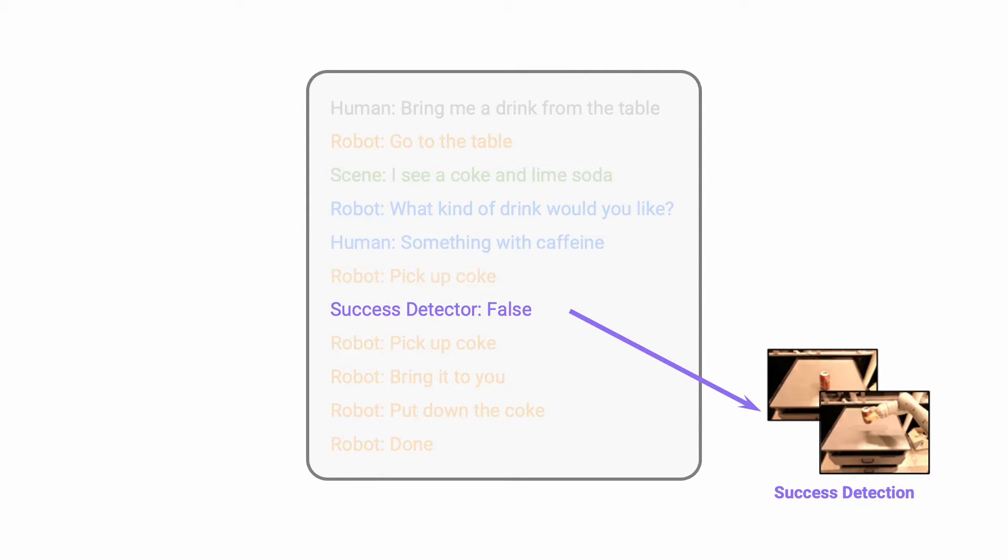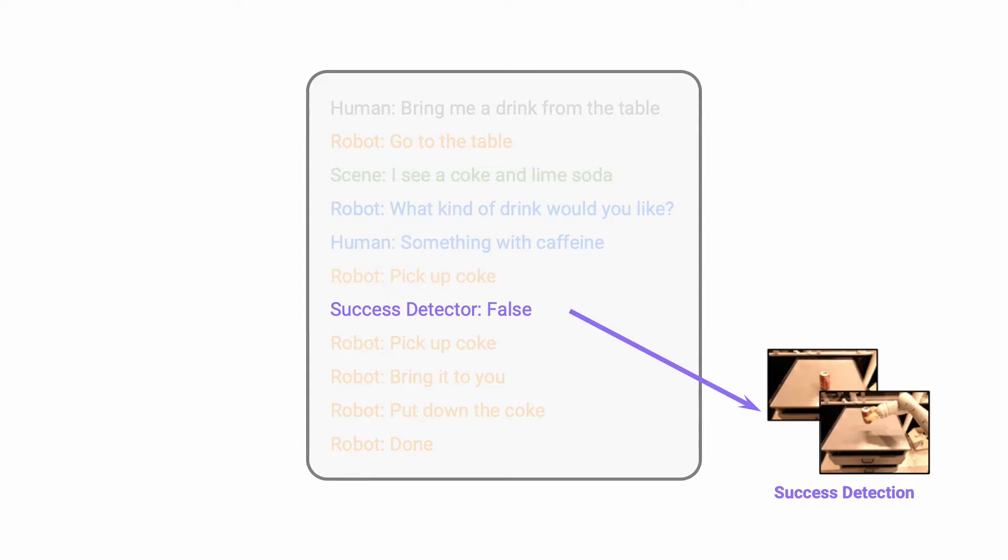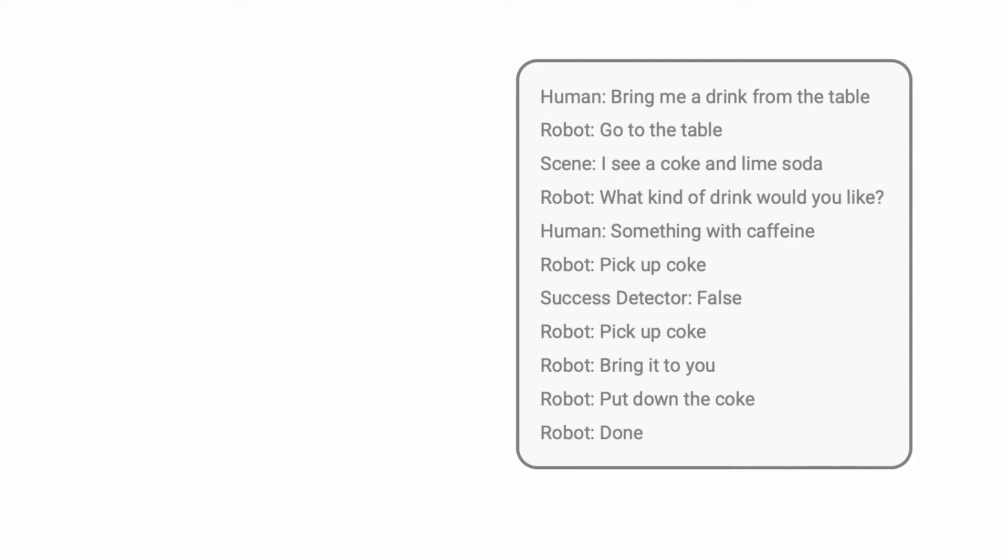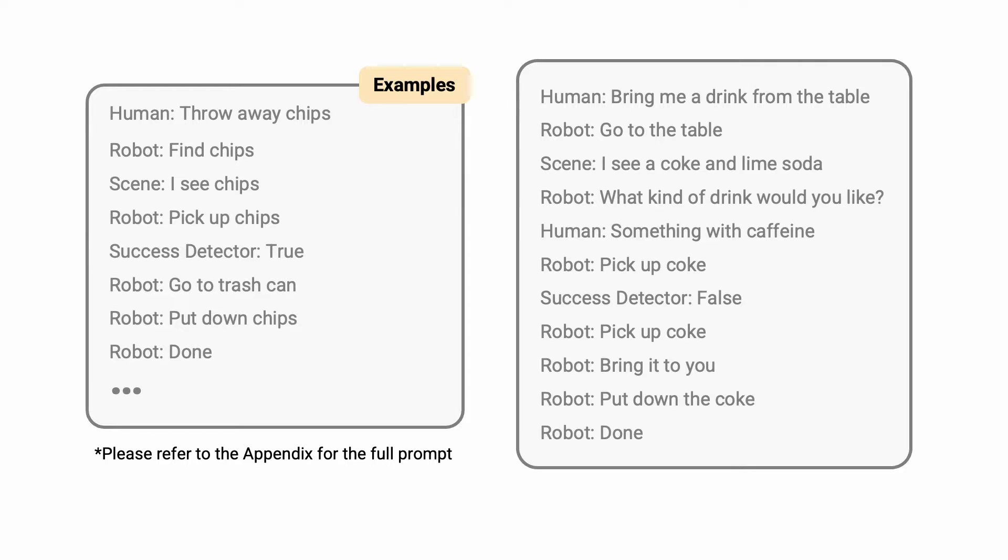The third kind of feedback is success detection. This can either be a trained model or an engineered solution using heuristics. Importantly, the entire process only requires few-shot prompting and no additional training for the language model.